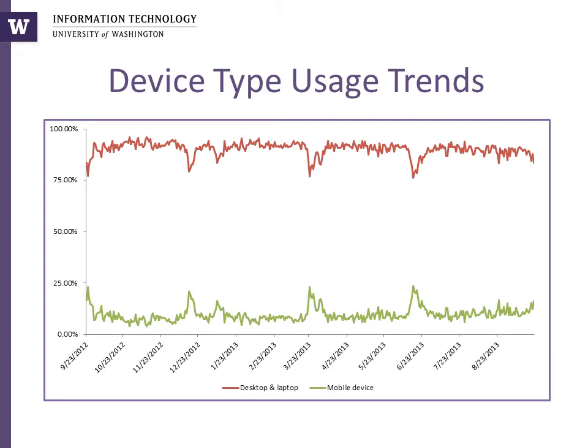On the first day of the quarter, there are approximately twice as many visits from desktop computers than on other days, while there are four to eight times as many visits from mobile devices as on other days. Overall, these technology usage data indicate that mobile access to MyUW continues to increase, suggesting that it is important for MyUW to provide information in a mobile-friendly format that works for both mobile phones and tablet devices.